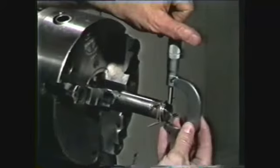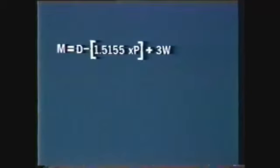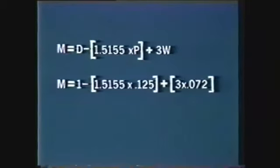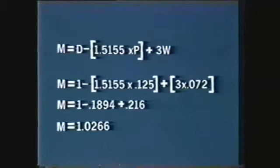To determine the correct micrometer reading for a properly finished thread, use the formula: M, or the dimension over the wires, equals D, the major or outside diameter, minus the constant 1.5155 times P (pitch, or 1 divided by the number of threads per inch), plus the quantity 3 times W (the wire diameter). Using values for a 1-inch 8 UNC thread: M equals 1 minus (1.5155 times 0.125) plus (3 times 0.072), giving M equals 1 minus 0.1894 plus 0.216, so M equals 1.0266.